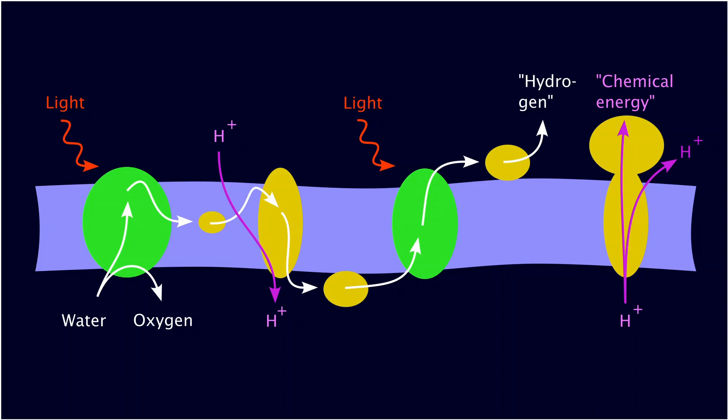And this energy then is used in another process with another protein complexes to actually generate chemical energy by transporting these protons back. And this chemical energy and the hydrogen, not real hydrogen, both are necessary for then producing sugars from carbon dioxide in a later process.